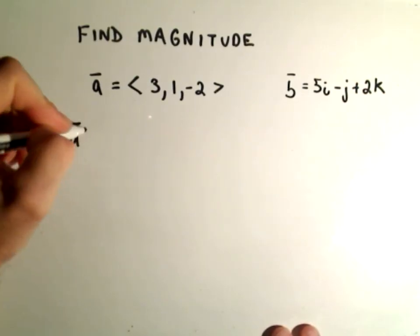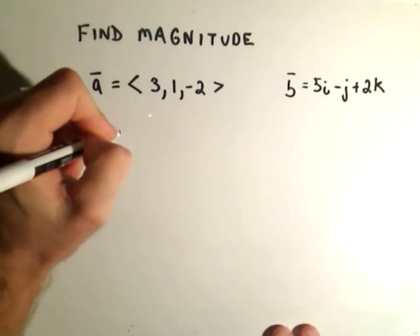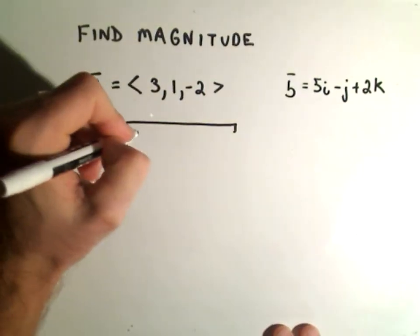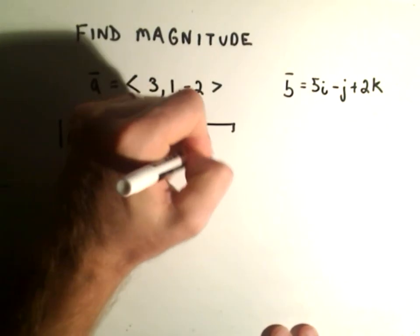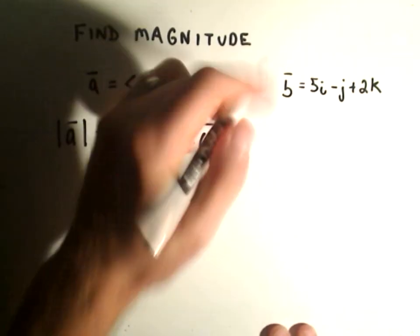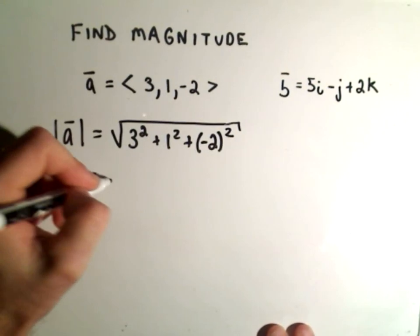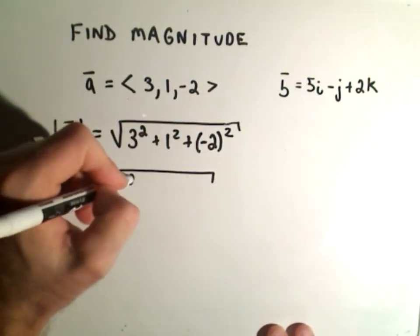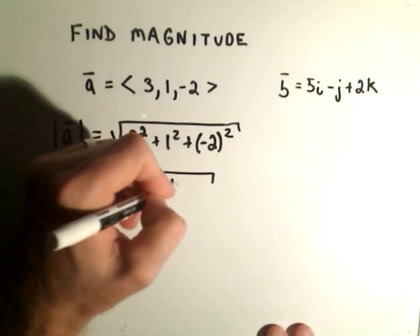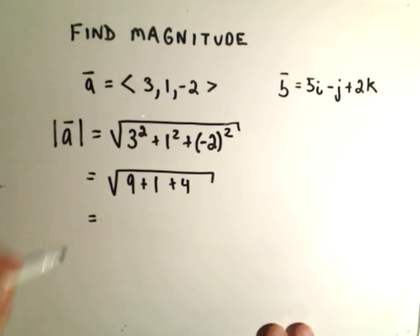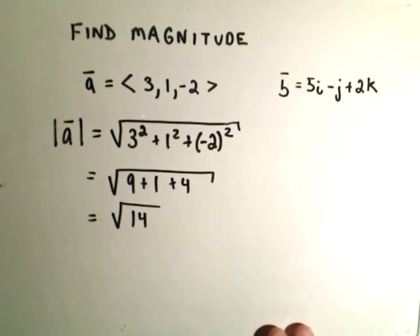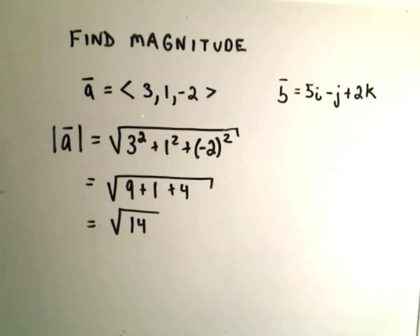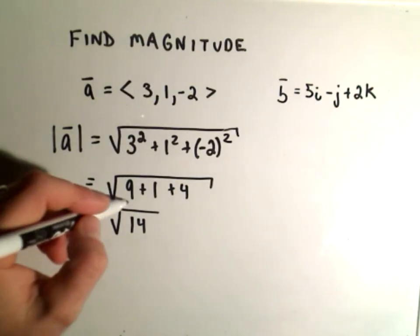The magnitude of that vector would be the square root of 3 squared plus 1 squared plus negative 2 squared. That gives us 9 plus 1 plus 4, or equivalently, the square root of 14. There's really not a lot of simplification you can do here, so there's the length.